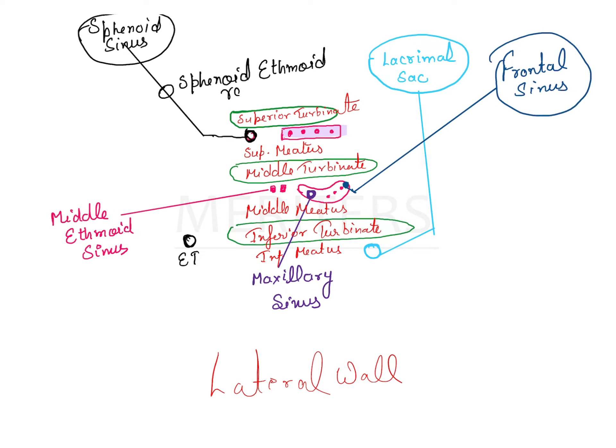There are a lot of openings in the lateral wall of the nose — these are from the sphenoid sinus, lacrimal sac, frontal sinus, maxillary sinus, and even the ethmoidal sinus. So we have to identify the location of these various openings.